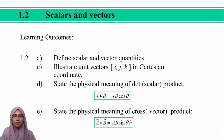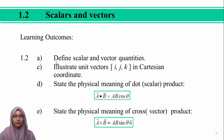Now it comes to the second subtopic of this chapter. There are four learning outcomes to cover. The first is to define scalar and vector quantities. The second is to illustrate the unit vectors in Cartesian coordinates. The third is to state the physical meaning of scalar product. And lastly, to state the physical meaning of vector product.